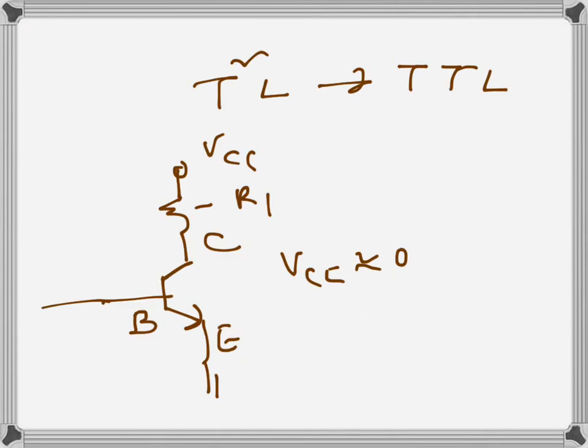If the transistor is driven into saturation, it is acting as a closed switch. So there will be an IC here. If this is VCC, the value of IC will be IC equals VCC over R1, and VCE will be approximately zero. This is happening when the transistor is driven into saturation.